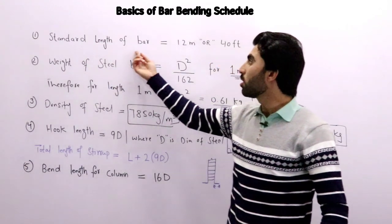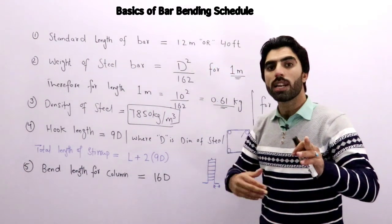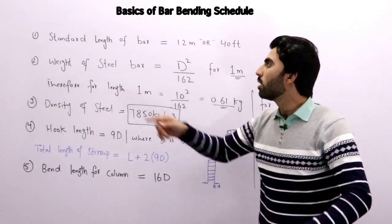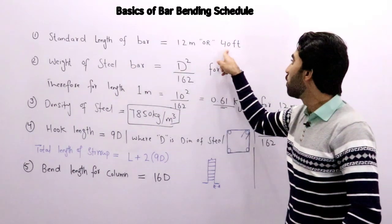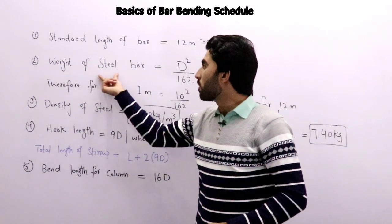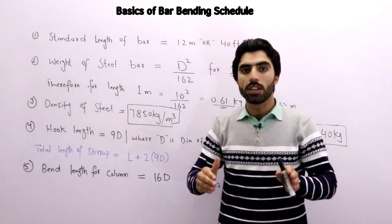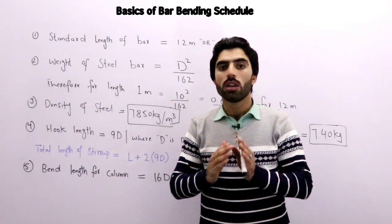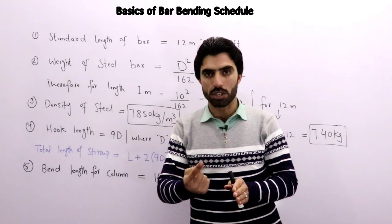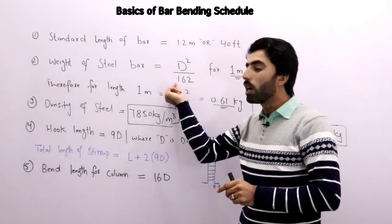That's 12 meter or 40 feet. The first one, standard length of bar—never forget that standard length of bar in each country should be 12 meter or 40 feet. Now the second one is weight of steel bar. I have already discussed in many videos that we use to find weight of steel for one meter length. That's D² divided by 162.